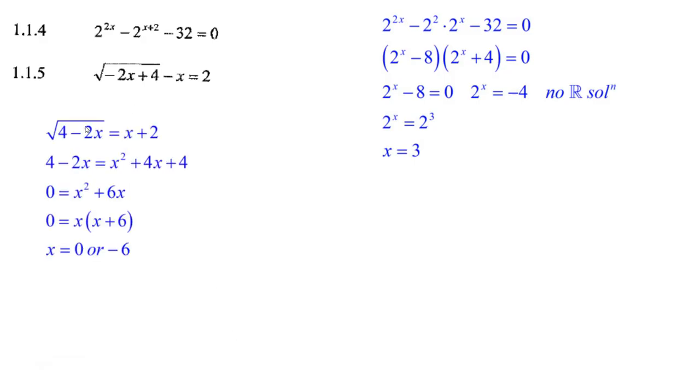Now over here, we've got a third equation. We add x, square both sides. That's really 4 minus 2x. When you square a square root, you get 4 minus 2x. The square root goes away. There is x squared plus 4x plus 4.